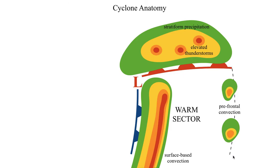At the prefrontal boundary, where you have the interface between really warm and moist air and not-so-warm or not-as-moist air, sometimes you can get showers and thunderstorms developing along that. Those typically tend to be weaker, but you can get some intense thunderstorms developing well ahead of the main cyclone if the conditions are right. Usually these are a bit weaker because the upward motions along this prefrontal boundary tend to be weaker than the upward motions along a cold front or a warm front.